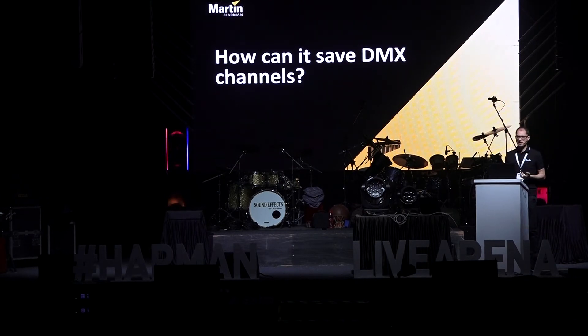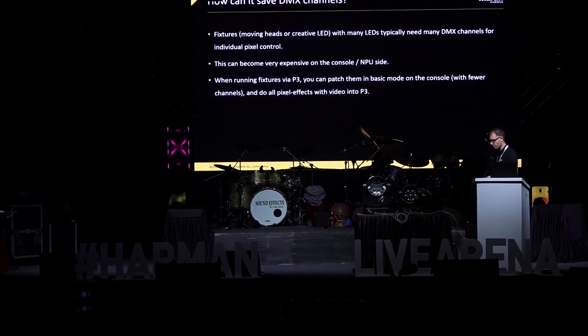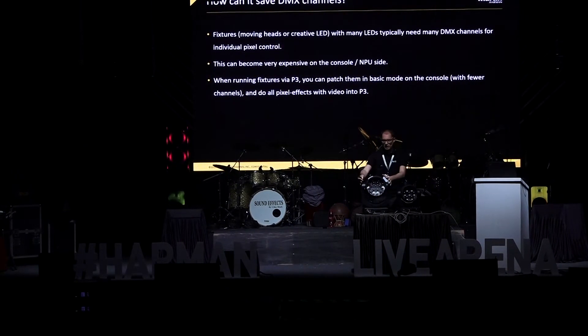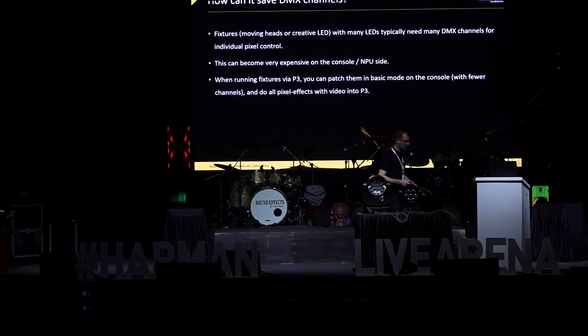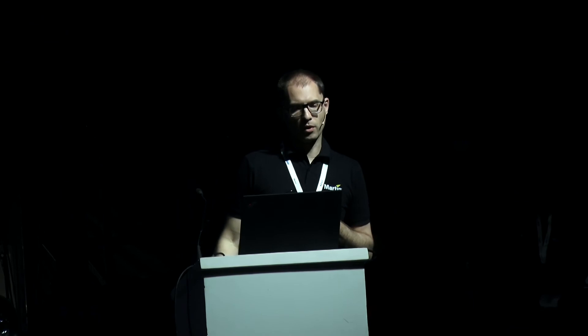The last advantage of the P3 controller is how it can save you on DMX channels. Many of these products have a large number of LEDs — for example, the MAC RPXL has 160 LEDs inside. Controlling them via DMX would consume hundreds of DMX channels, requiring a big console with many processing units. But when you control products via P3, you can put the fixtures in a small mix mode and get all the pixel effects with video without paying for all those DMX channels.